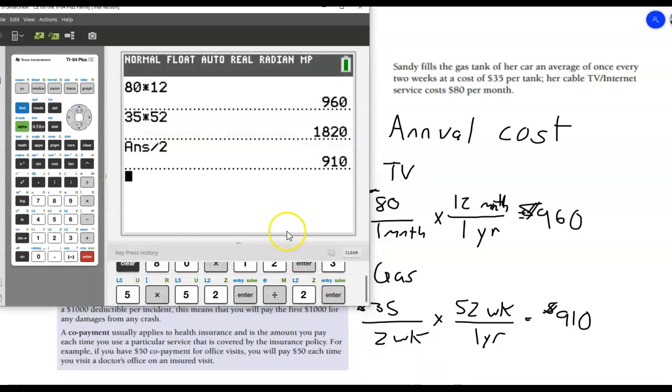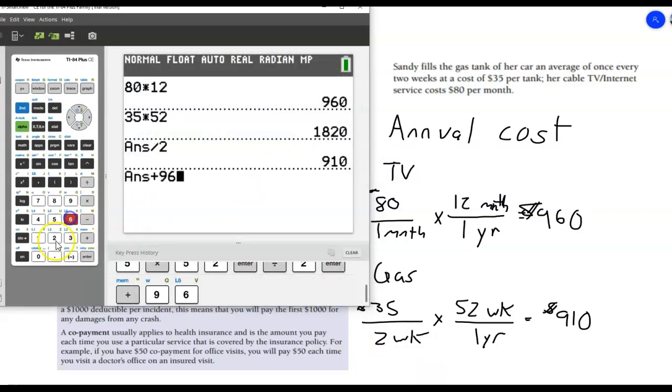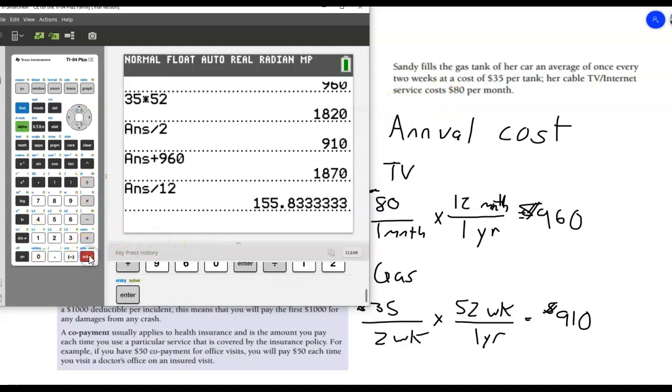So my total annual expense, this is going to be the 910 plus that 960. That's $1,870 per year just for the TV, internet service, and the gas. And then divide that by 12, and it's about $155.83 every month that I'm going to need to budget out for those two things.